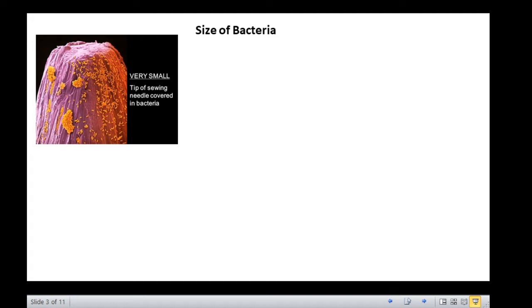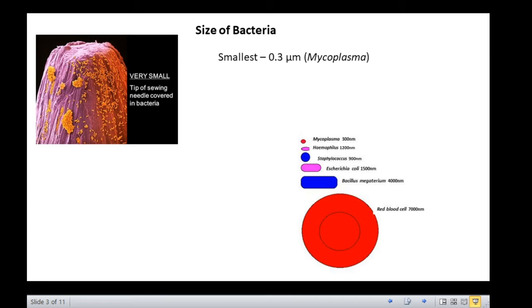Bacteria do vary in their size. Some are as small as the largest viruses. The smallest, for example, some members of the genus Mycoplasma, are about 300 nanometers, that is 0.3 micrometers in diameter, approximately the size of the largest viruses, pox virus. Escherichia coli is a short rod of about an average size, that is 1.1 to 1.5 micrometers wide and 2 to 6 micrometers long. A few bacteria are fairly large. Some spirochetes occasionally reach 500 micrometers in length, and the cyanobacterium Oscillatoria is about 8 micrometers in diameter, the same diameter as a red blood cell.